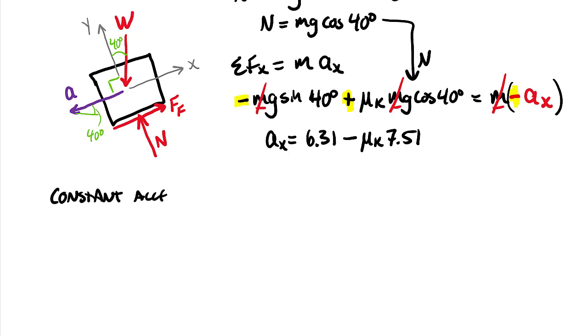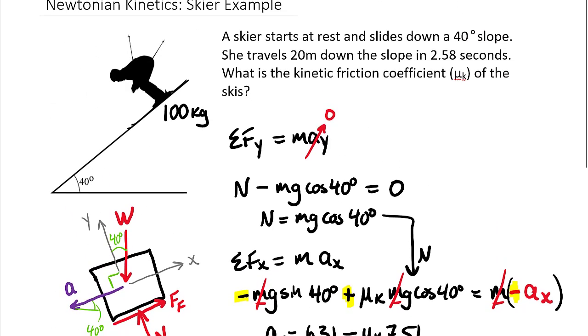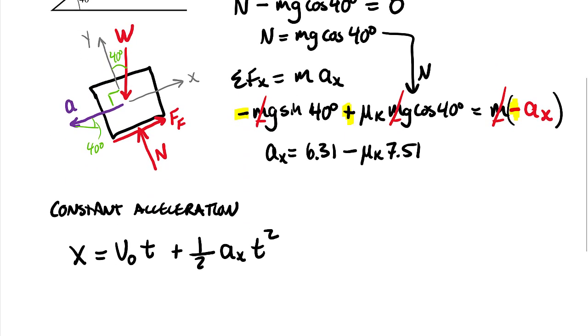And with a constant acceleration, we can write the equation for relating the position, the velocity, the acceleration, as being the distance down the slope x is equal to our initial velocity times our time elapsed plus one-half our acceleration in the x direction, not in the y direction, but just in the x direction, times our elapsed time squared. And then revisiting the problem statement, we see we have a distance and we have a time. And we just found this acceleration equation here that we can plug in for this.